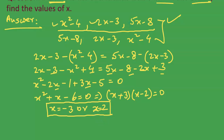Let us check our answer by finding the values of the three terms. When x equals negative 3: x squared minus 4 is 9 minus 4 equals 5; 2x minus 3 is negative 6 minus 3 equals negative 9; 5x minus 8 is negative 15 minus 8 equals negative 23. The common difference is negative 9 minus 5 equals negative 14, and negative 23 minus negative 9 equals negative 14. So yes, x equals negative 3 is correct.